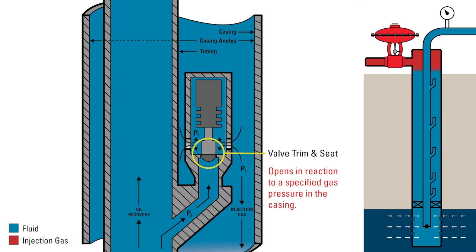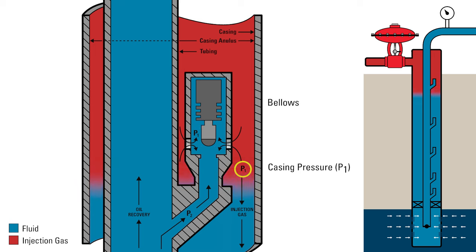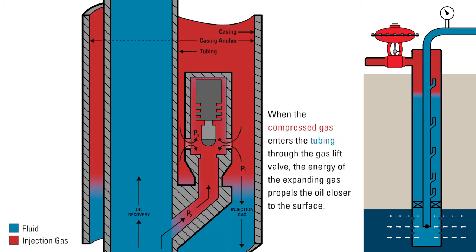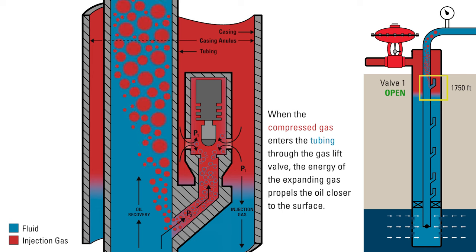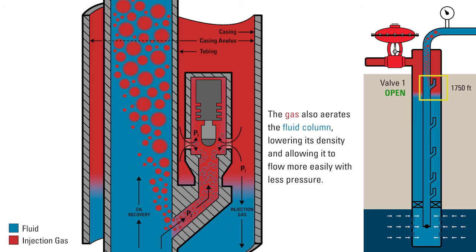Most gas lift valves open in reaction to a specified gas pressure in the casing. The casing pressure compresses a bellows inside of the valve and raises the stem to open the valve. When the compressed gas enters the tubing through the gas lift valve, the energy of the expanding gas propels the oil closer to the surface. The gas also aerates the fluid column, lowering its density and allowing it to flow more easily with less pressure.